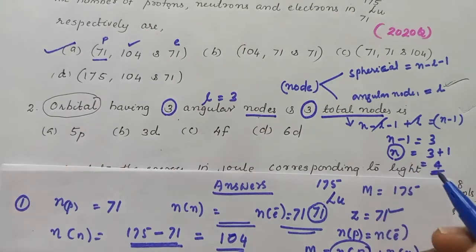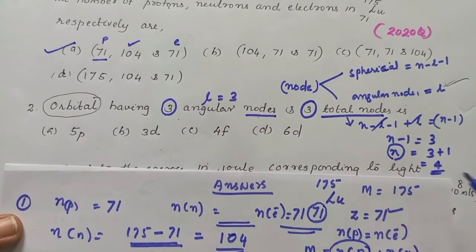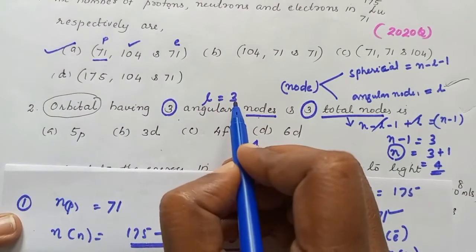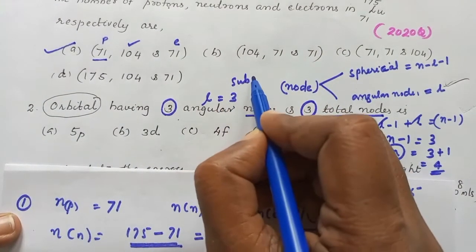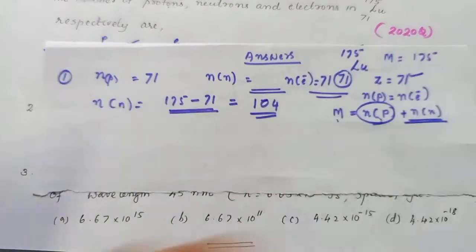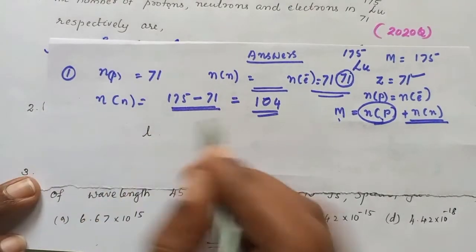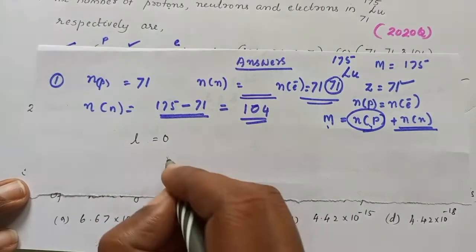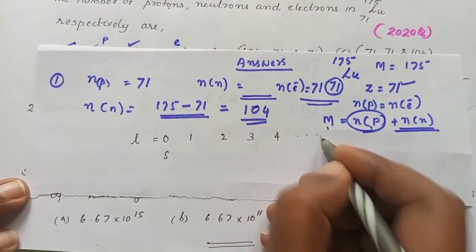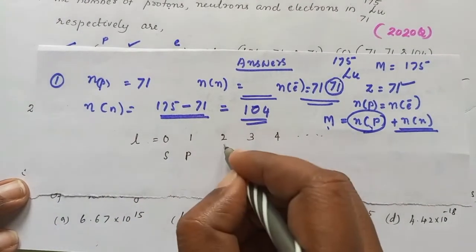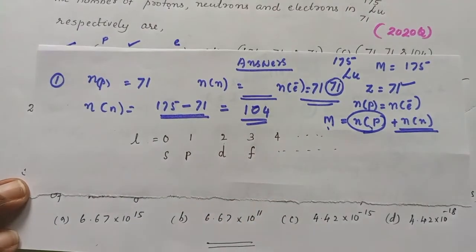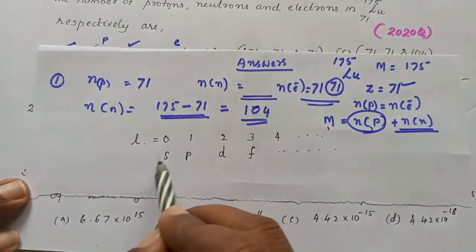n gives the main shell, so this is the fourth shell. The l value gives the idea about sub-shells: S, P, D, F. We know that l equals 0 corresponds to S orbital, l equals 1 corresponds to P orbital, l equals 2 corresponds to D orbital, and l equals 3 corresponds to F orbital.